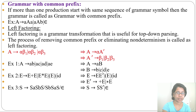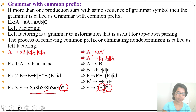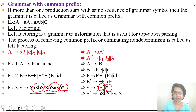Another example: from S derive SaSbS, SbSaS, or epsilon. The common prefix here is S. So from S derive S S' or epsilon (epsilon has no common prefix, write it directly). S' is a new variable. From S' derive aSbS or bSaS.